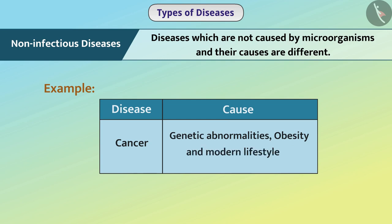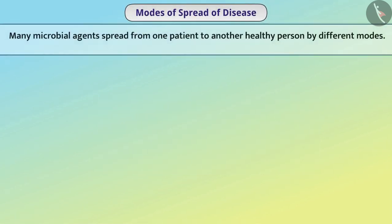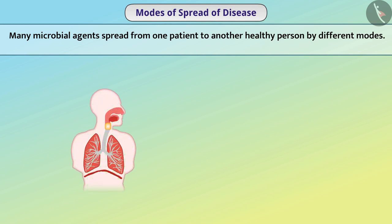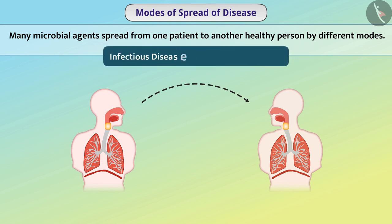Now let us understand the modes of spread of disease in detail. Many microbial agents spread from one patient to another healthy person by different modes. Therefore, infectious diseases are also called communicable diseases.